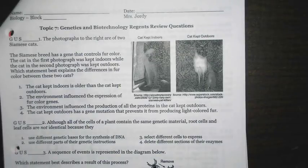Hey guys, we're on topic 7, genetics and biotechnology regents review questions. Number 1 says the photographs to the right are of two Siamese cats. The Siamese breed has a gene that controls fur color. The cat in the first photograph was kept indoors, while the cat in the second photograph was kept outdoors. Which statement best explains the differences in fur color between these two cats?